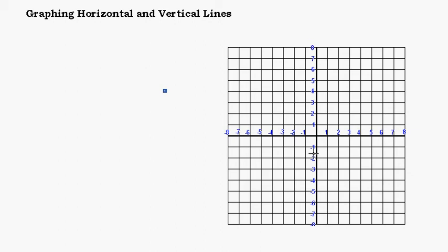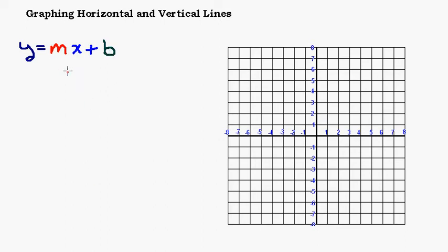In this video we're going to talk about graphing horizontal and vertical lines, but before we start that, let's do a quick review of graphing lines — basically we would call them oblique lines or diagonal lines. Almost all lines are going to use this form right here: y equals mx plus b, hopefully you've seen this before. The m, whatever number is being multiplied by x, that's going to be your slope.